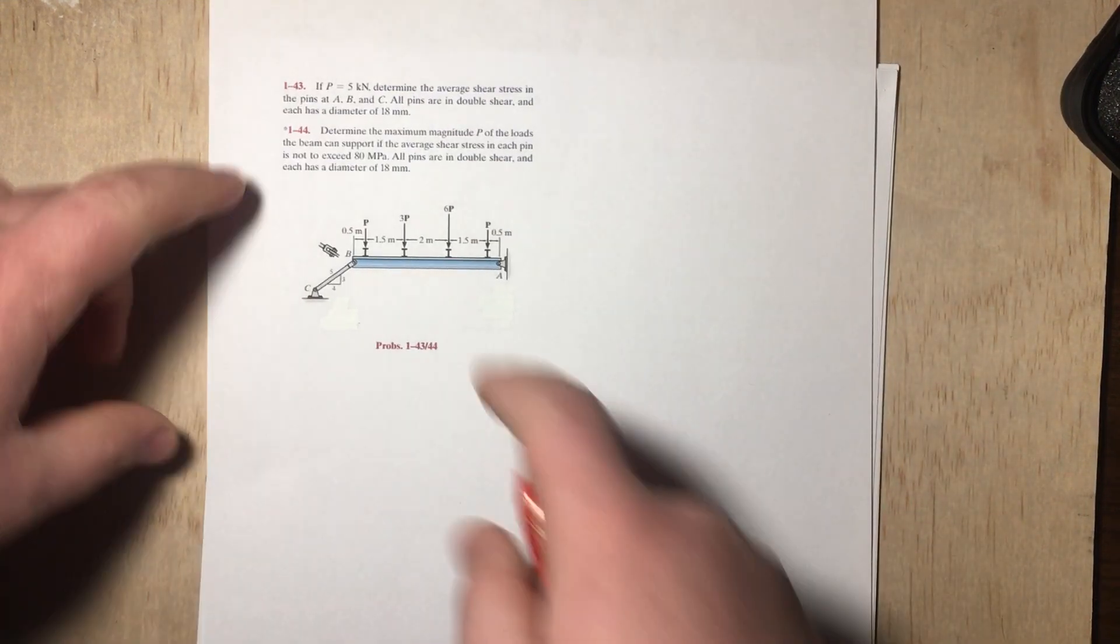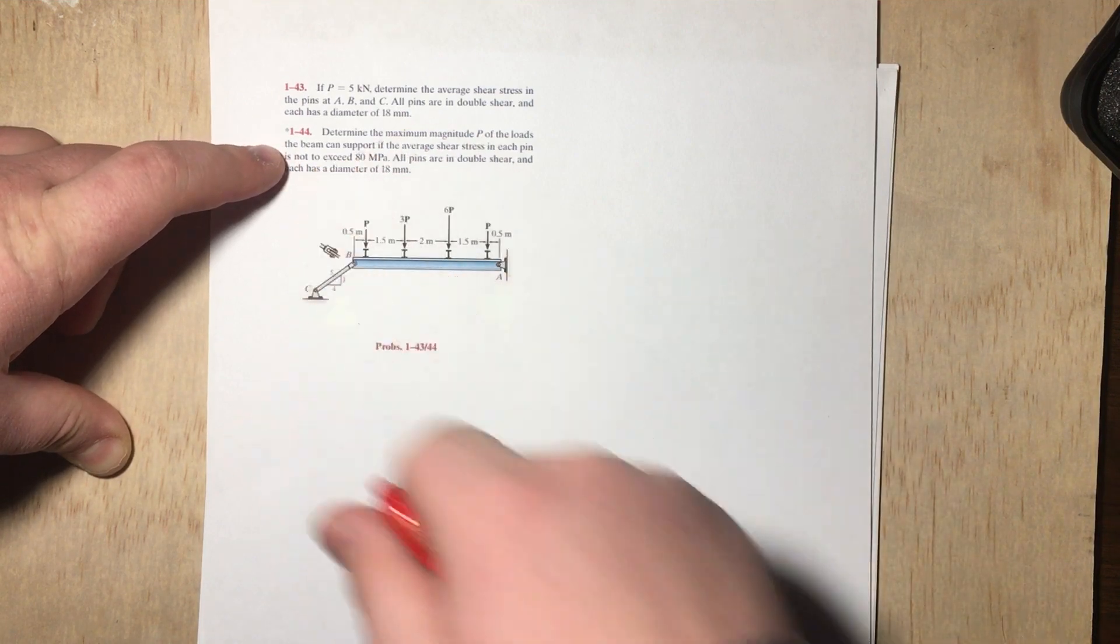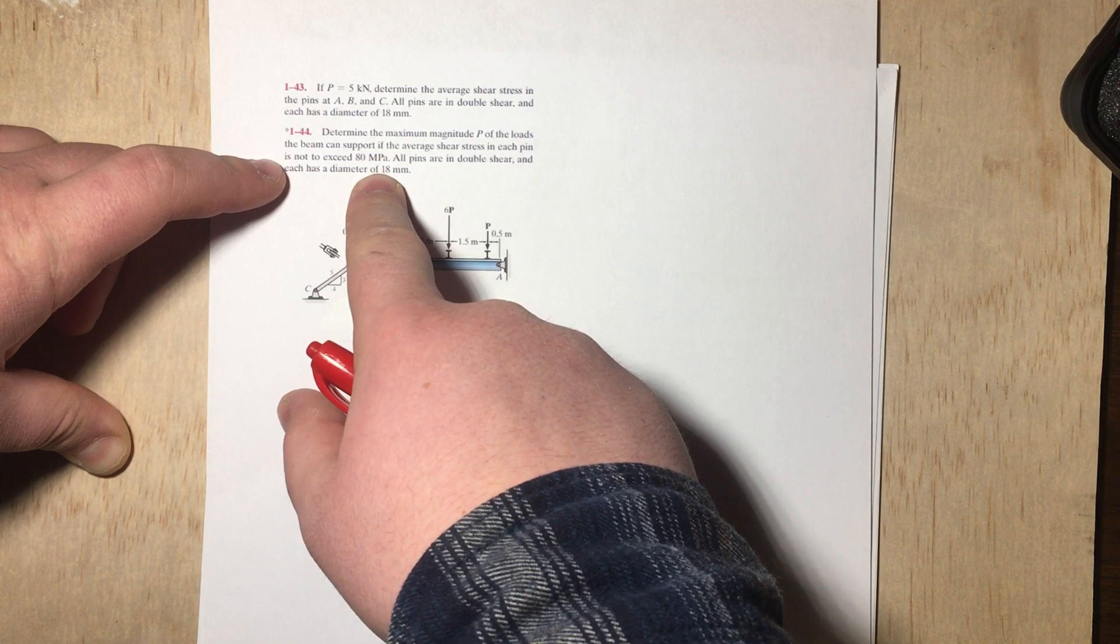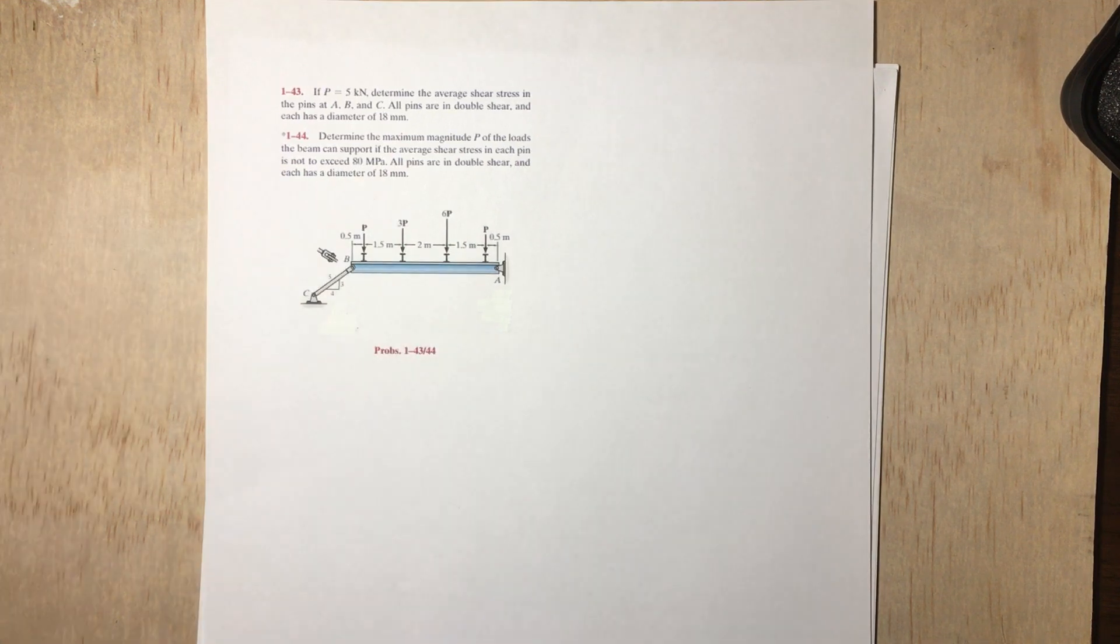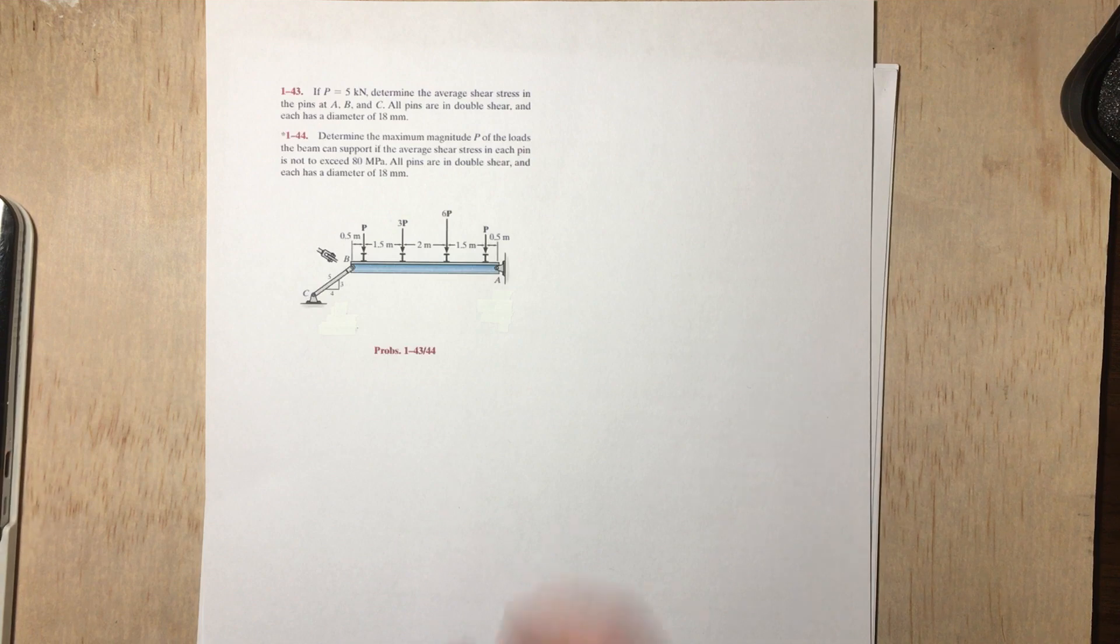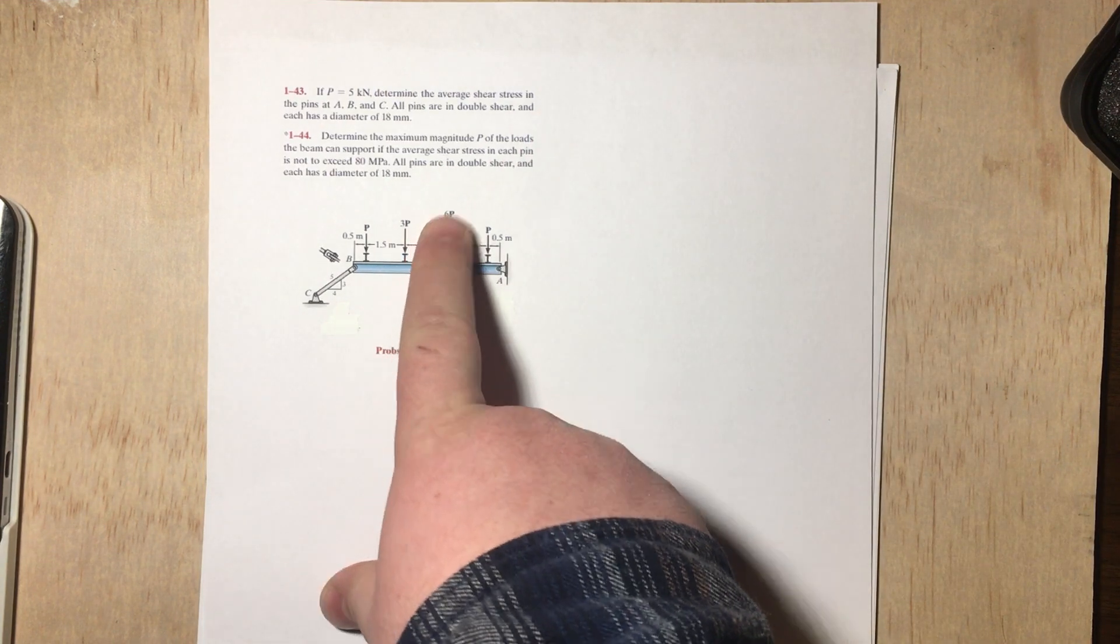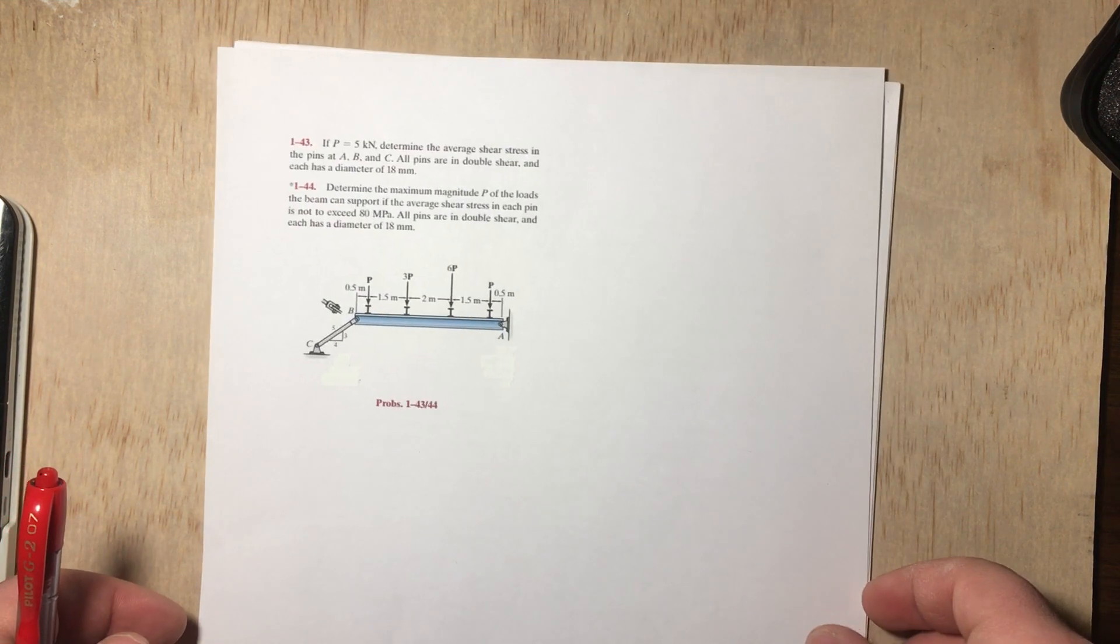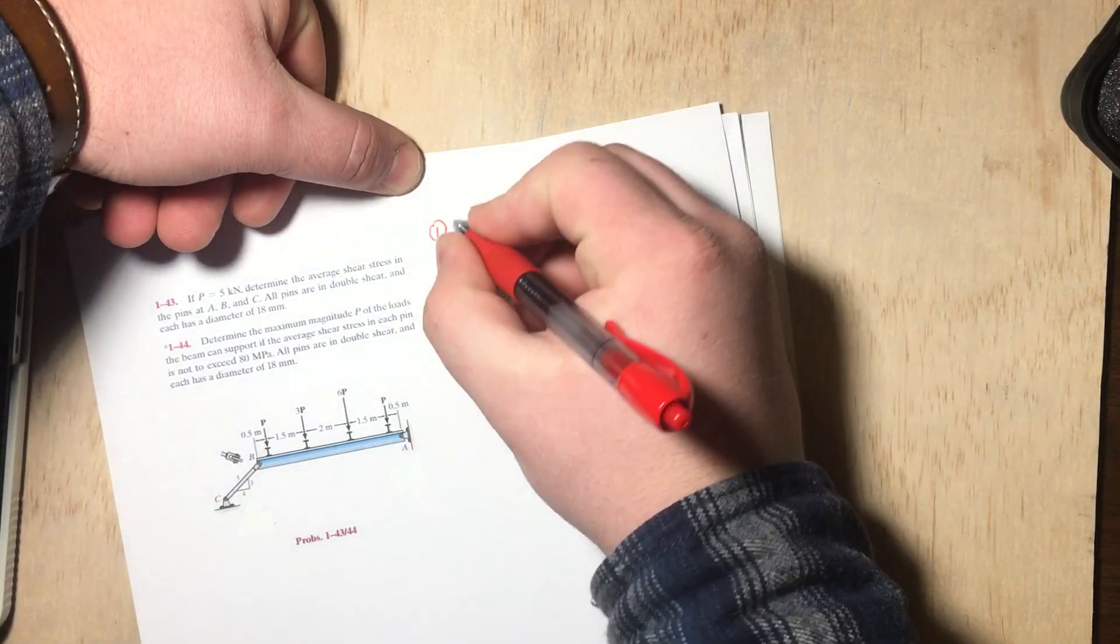Problem 44 says: determine the maximum magnitude P of the loads the beam can support if the average shear stress in each pin is not to exceed 80 MPa. All pins are in double shear and each has a diameter of 18 mm. So a very similar setup to what we had on the previous question except this time we're given shear and we are asked to find force P.